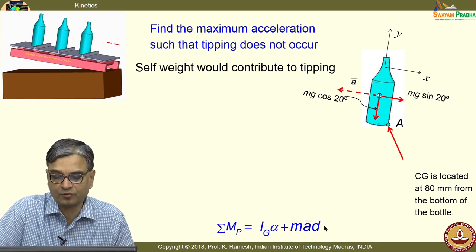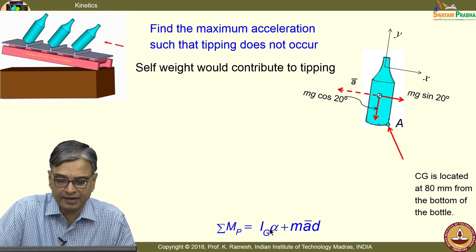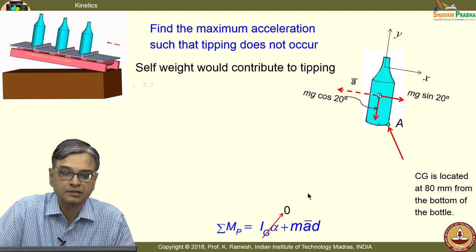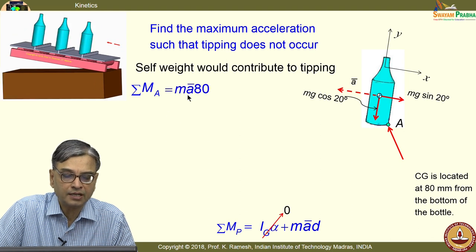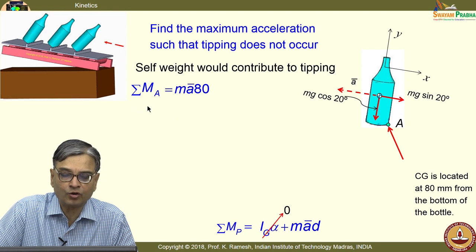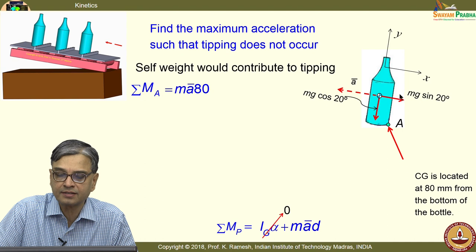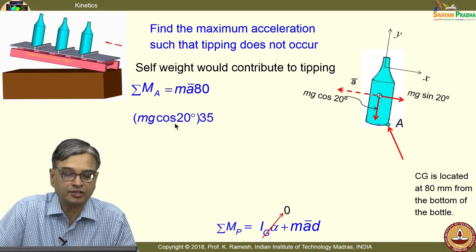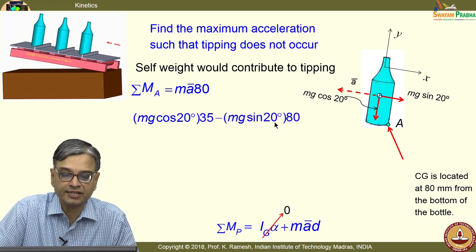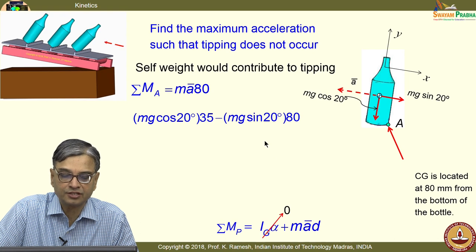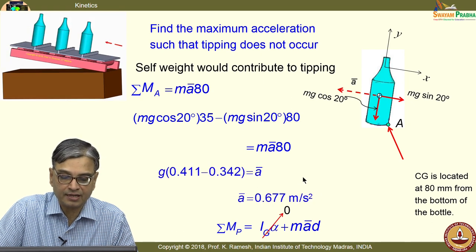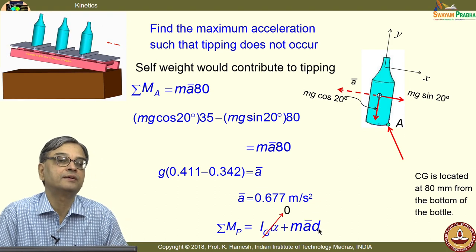All the required parameters are given. Since there is no rotation in this problem, I_G alpha is zero. So we write M_A equal to M·Ā times 80, and the contributing forces give us: mg cos 20 × 35 plus mg sin 20 × 80 equals M·Ā_bar × 80. This gives the limiting value of acceleration as 0.67 metres per second squared.